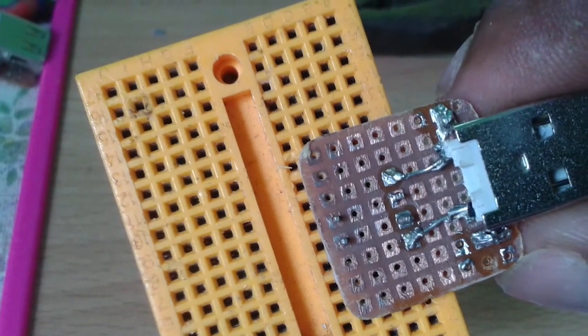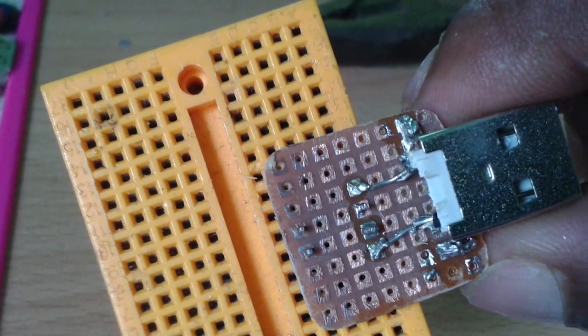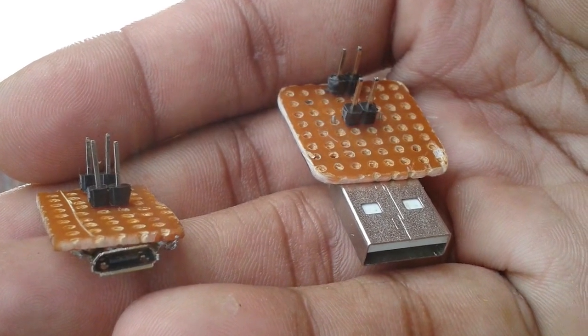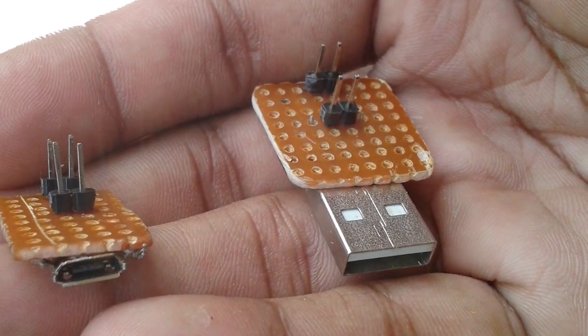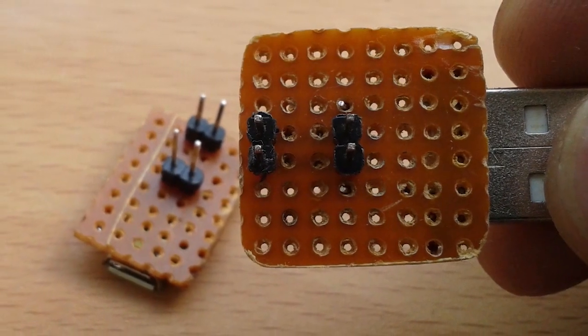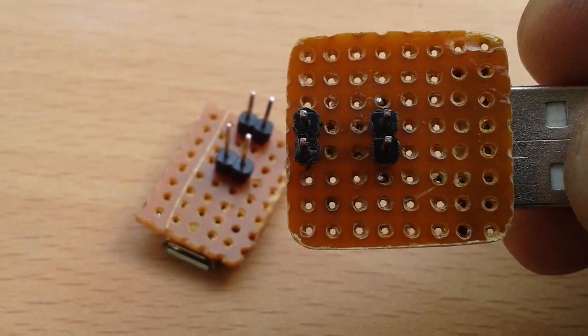After that, take out a pair of headers with two legs like this and solder one on the end of the perf board opposite to the USB jack, and the other two holes next to it. The second header is for giving the PCB extra support.